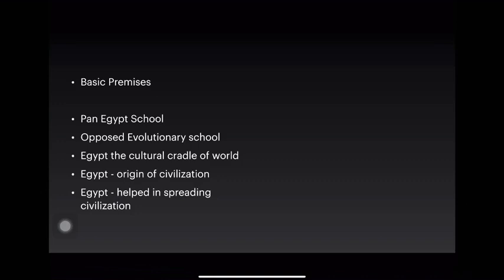Coming to the basic premises of the British school of diffusionism, they are also called the Pan-Egypt school. They opposed the evolutionary school. They considered Egypt as the culture cradle of the world. They claimed that Egypt is the origin of civilization and that culture spread from there. Egypt being a fully fledged state with hydraulic and agricultural systems, laws, government, mummification, and burial of debt — this helped in spreading civilization.